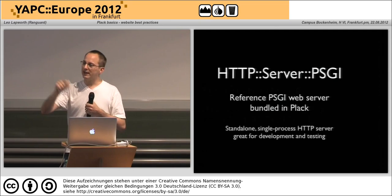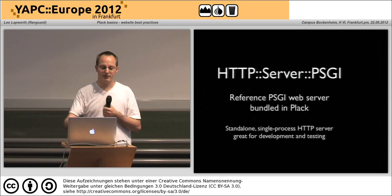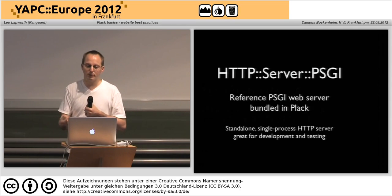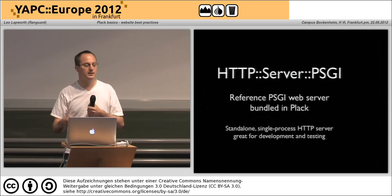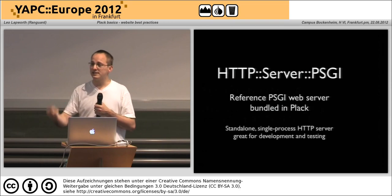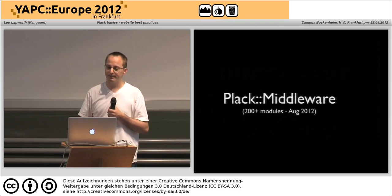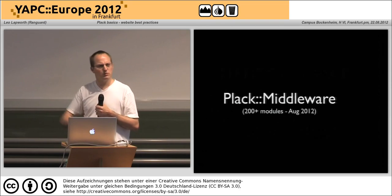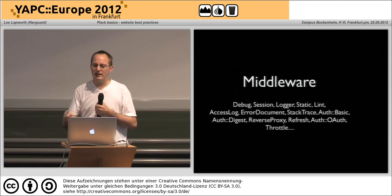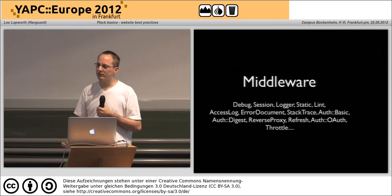So if we run plackup we get the message: 'HTTP::Server::PSGI accepting connections on localhost port 5000.' It uses HTTP::Server::PSGI by default because that follows the specification and it's a single-process HTTP server, which is very useful just for developing and testing.